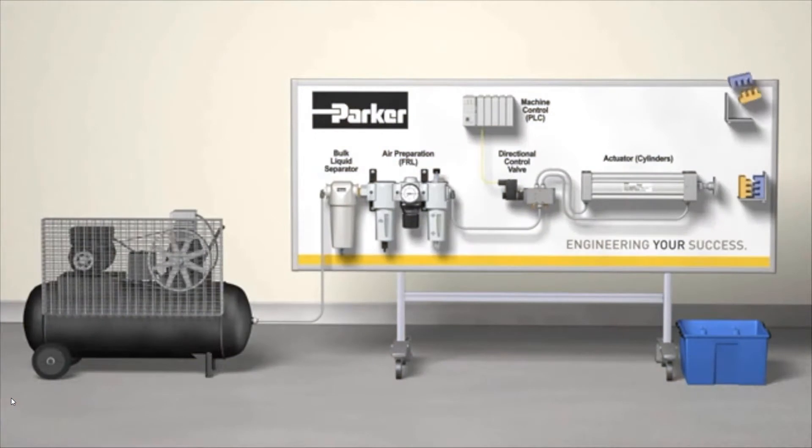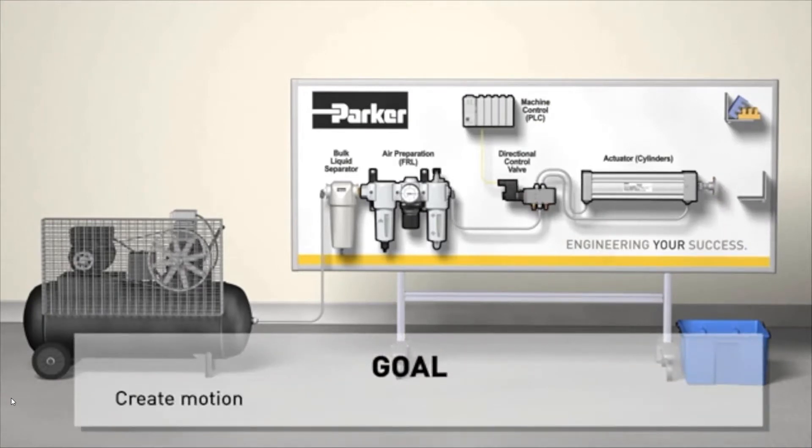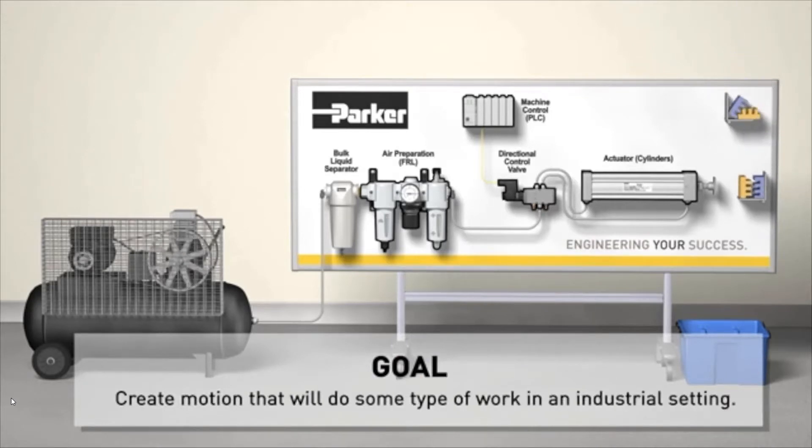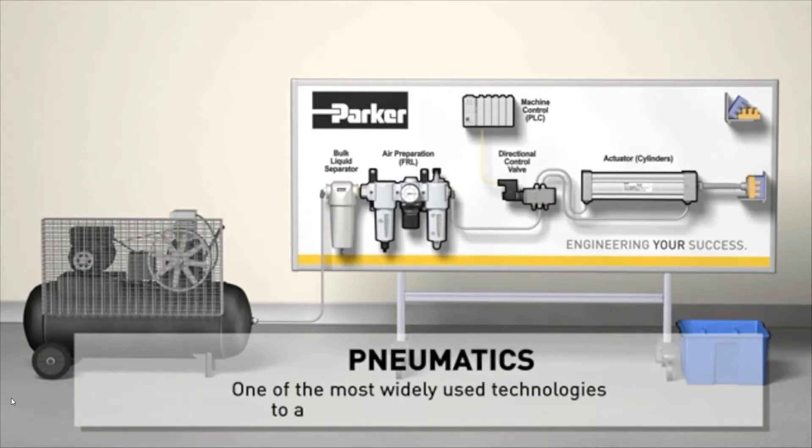This video will describe how industrial pneumatic systems work. These five types of components represent the most common elements used in these systems. The ultimate goal of this entire collection of components, in most cases, is to create motion that will do some type of work in an industrial setting. Pneumatics is one of the most widely used technologies to automate repetitive processes.